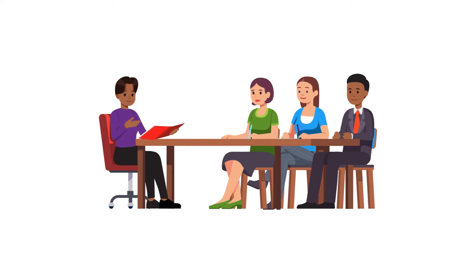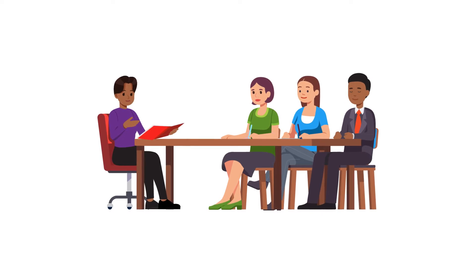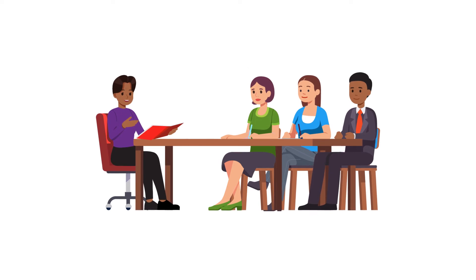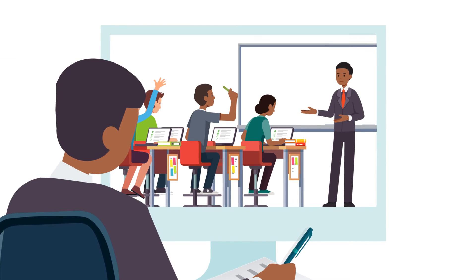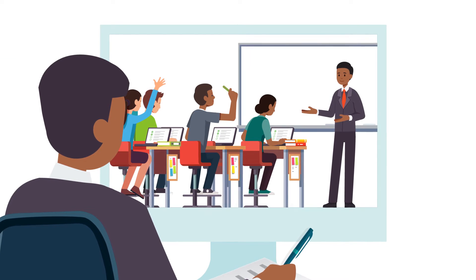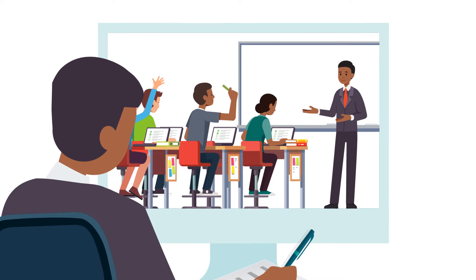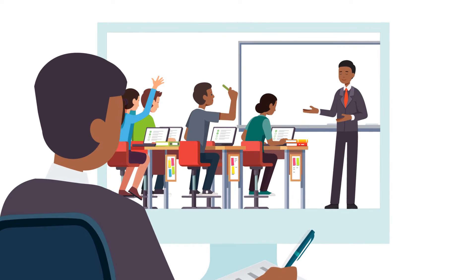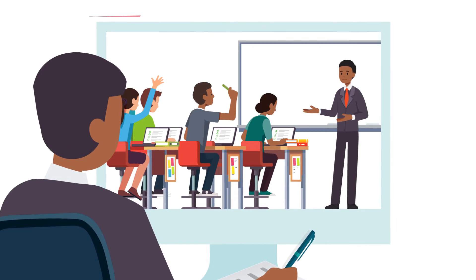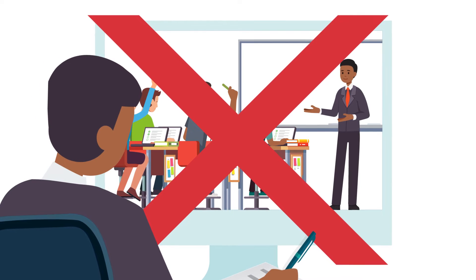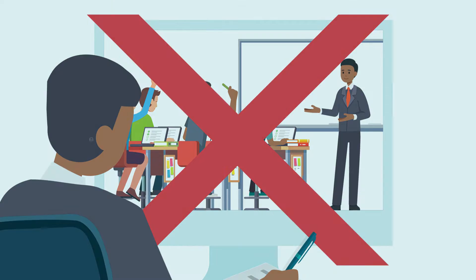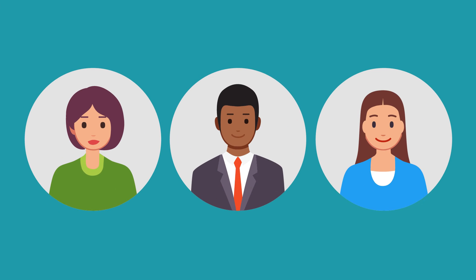Next, identify and train those who will conduct the observations. Ideally, to reduce observer bias, observers should be neutral. For example, a facilitator should not observe their own class or their colleagues' classes. Consider using administrators, evaluation staff, or support staff as observers instead.